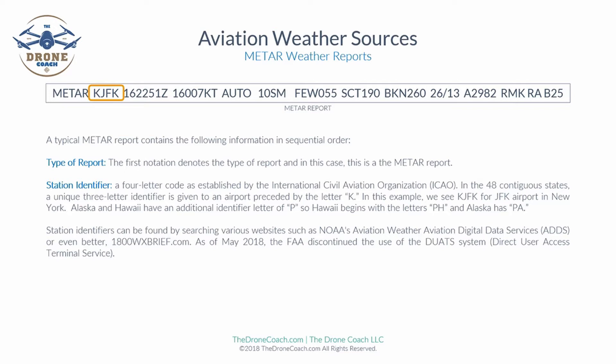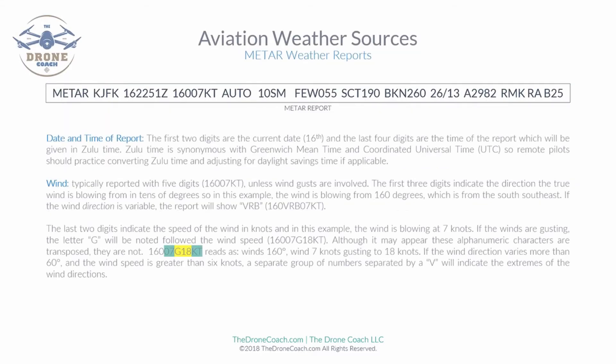Station identifiers can be found by searching websites such as NOAA's Aviation Weather Digital Data Services or 1-800-WX-Brief.com. Incidentally, as of May 2018 the FAA discontinued the use of the DUATS system, so any reference to that on the internet is no longer in use.